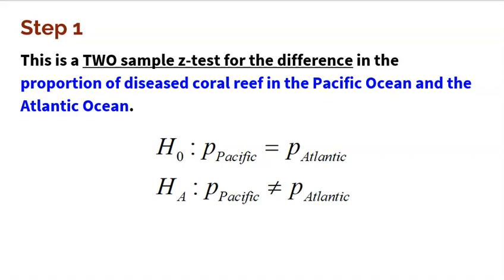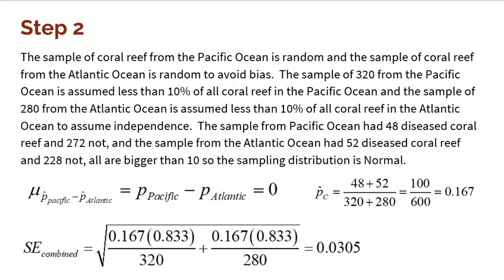At the end we're going to have to double our p-value. Step two is checking conditions. The samples of coral reef from the Pacific Ocean and Atlantic Ocean are random to avoid bias. The sample from the Pacific Ocean is under 10% of all coral reef from the Pacific Ocean, and the sample of 280 from the Atlantic Ocean is under 10% of all coral reef from the Atlantic Ocean, to assume independence. Each sample had 10 or more successes and failures: 48 diseased and 272 non-diseased in the Pacific; 52 diseased and 228 non-diseased in the Atlantic. The sampling distribution is going to be normal.